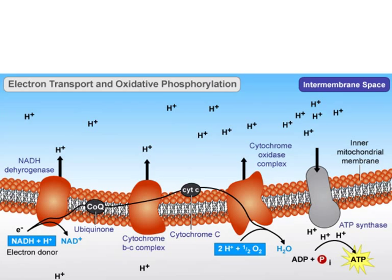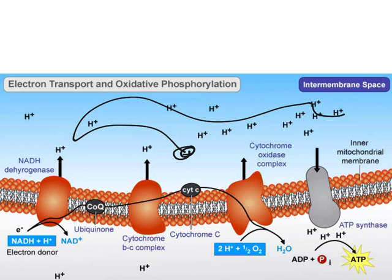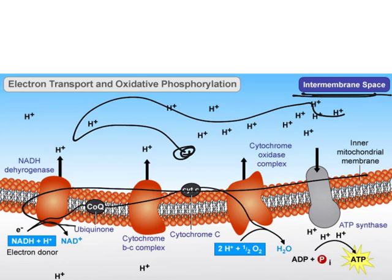Just so you have an idea, this whole region over here is the intermembrane space. Remember that it takes place in the mitochondria — this membrane right here is the mitochondrial membrane, which is also called the cristae.